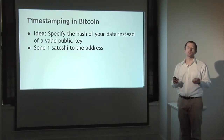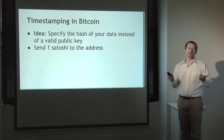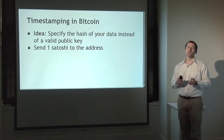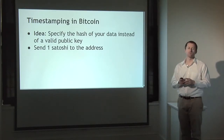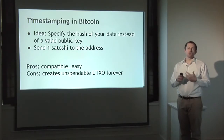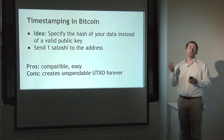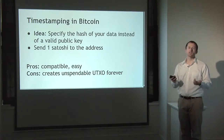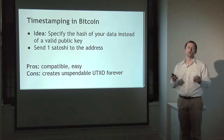The simplest idea people came up with is: instead of sending money to the hash of a public key, just send it to the hash of your data. You can send a very small amount — say one Satoshi, the minimum possible transaction value in Bitcoin — to that address. It's in your interest to send as little as possible because you're never going to get the money back, since that is a hash of data and not a public key, so there's no way to ever spend the coin. The advantage is this is simple and compatible with Bitcoin, but the disadvantage is you're creating a transaction you can never redeem, and Bitcoin miners have to track this as an unspent transaction output forever. The Bitcoin community takes a dim view of this approach because it creates unspendable outputs that have to be tracked.